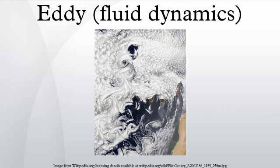Mesoscale ocean eddies are characterized by currents which flow in a roughly circular motion around the center of the eddy. The sense of rotation of these currents may either be cyclonic or anticyclonic. Oceanic eddies are also usually made of water masses that are different from those outside of the eddy; that is, the water within an eddy usually has different temperature and salinity characteristics to the water outside of the eddy.